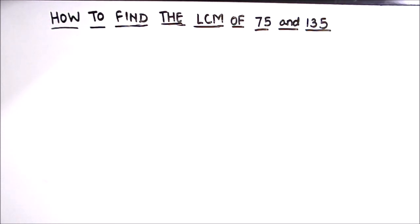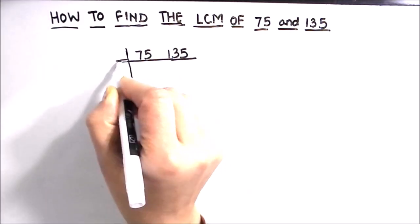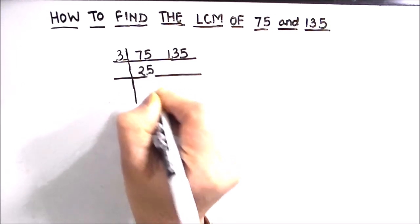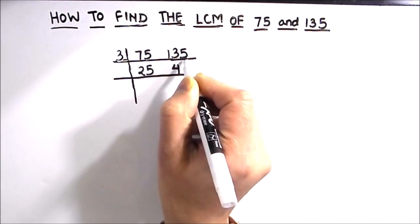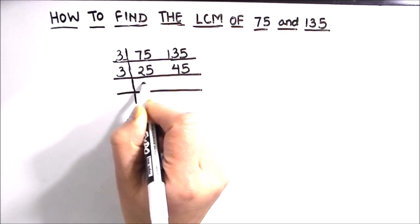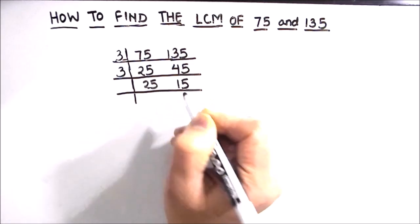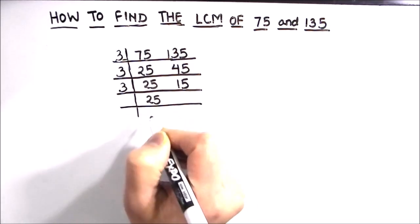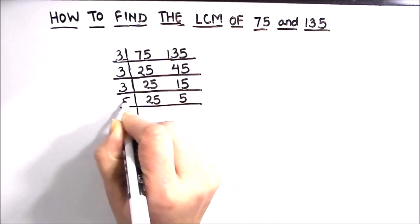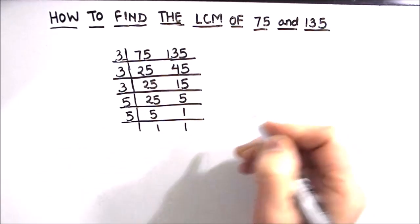Now let's find the LCM of 75 and 135 using the prime factorization method. Since both numbers are odd, we start dividing by 3. 75÷3=25 remainder, so we carry: 3×25=75 gives quotient 25; 135÷3=45. We divide 45 by 3 again to get 15, writing 25 as is. We divide 15 by 3 to get 5, writing 25 as is. Finally, 25 and 5 are both divisible by 5: 5×5=25 and 5×1=5, until both quotients reach 1.